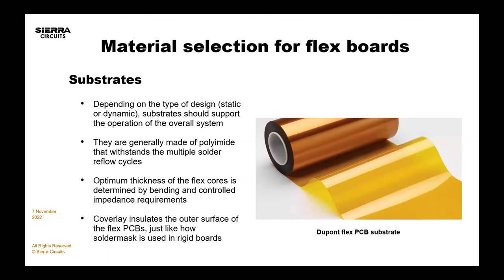Just a real quick introduction to the materials. Flex substrates are made of polyimide materials. PCB materials need to be able to withstand shock, vibration, solder reflow process, and they also need to perform well in terms of signal integrity and controlled impedance. Flex has traditionally been a little behind in electrical properties compared to rigid materials, so today we'll address some tricks that you can do.